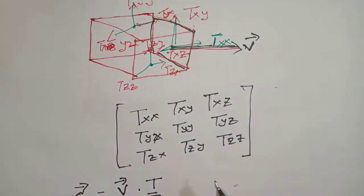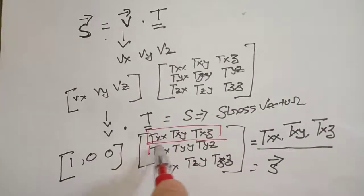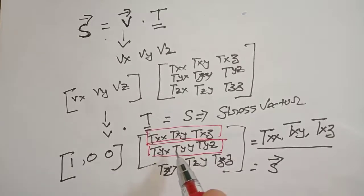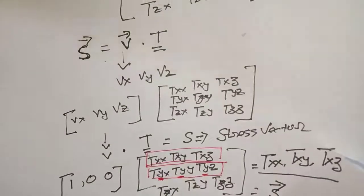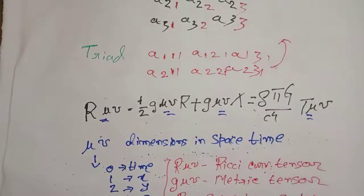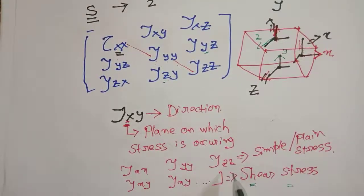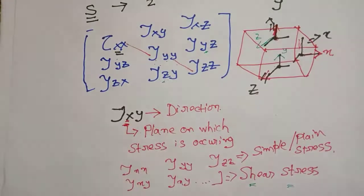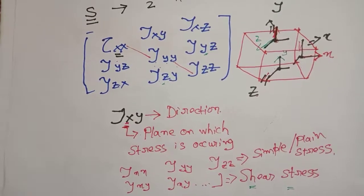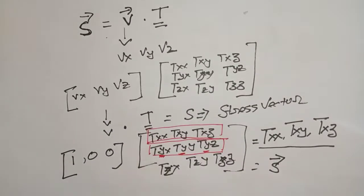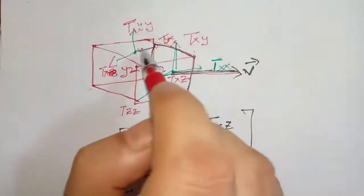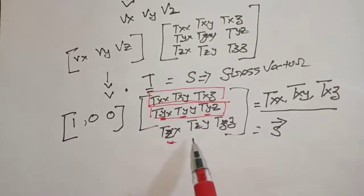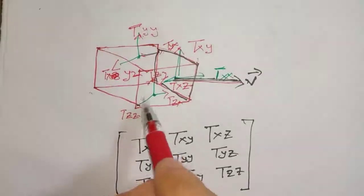T_xx, T_xy, and T_xz represent all the forces with vector v pointing towards the x direction — all forces on the x plane. As shown in the previous video, the first subscript shows the plane on which stress is occurring, and the second subscript shows the direction. So this y-plane row denotes all the forces of vector v occurring in the y direction.